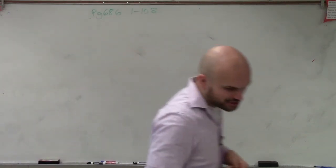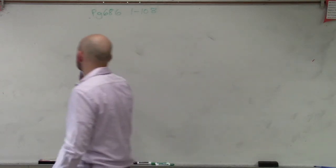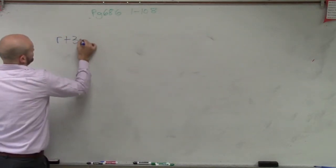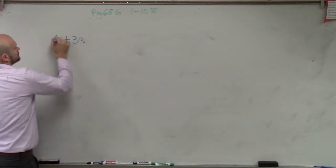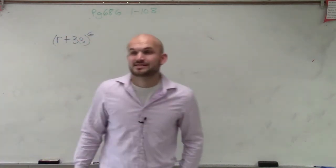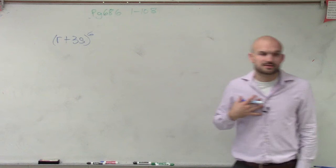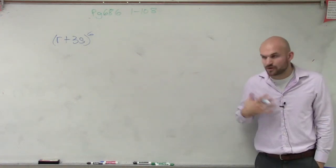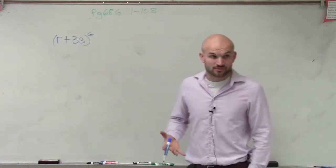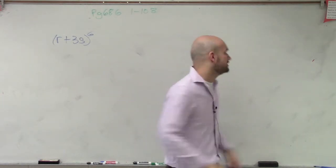So what they're asking us to do for number 23 is (r + 3s) raised to the 6th. And they're expecting us to expand this. So last class period, there are a couple of things that we talked about. The first thing is we talked about Pascal's Triangle, which deals with the coefficients as we expand a binomial.